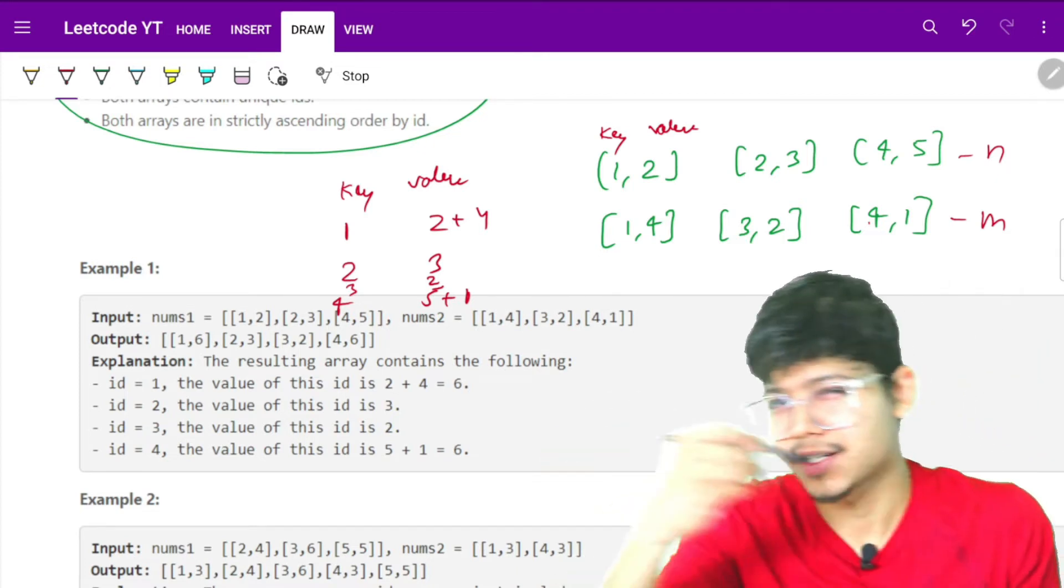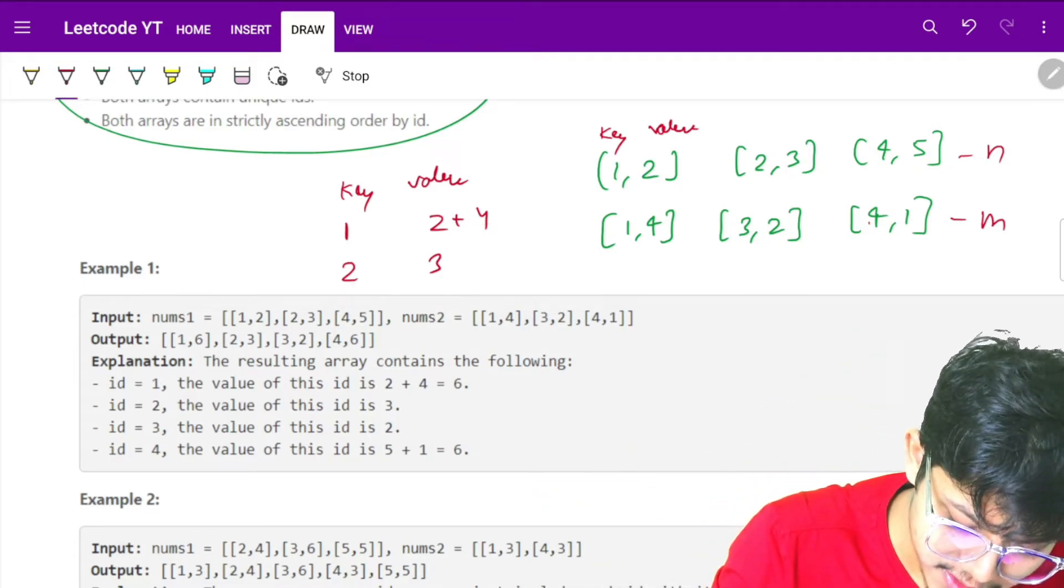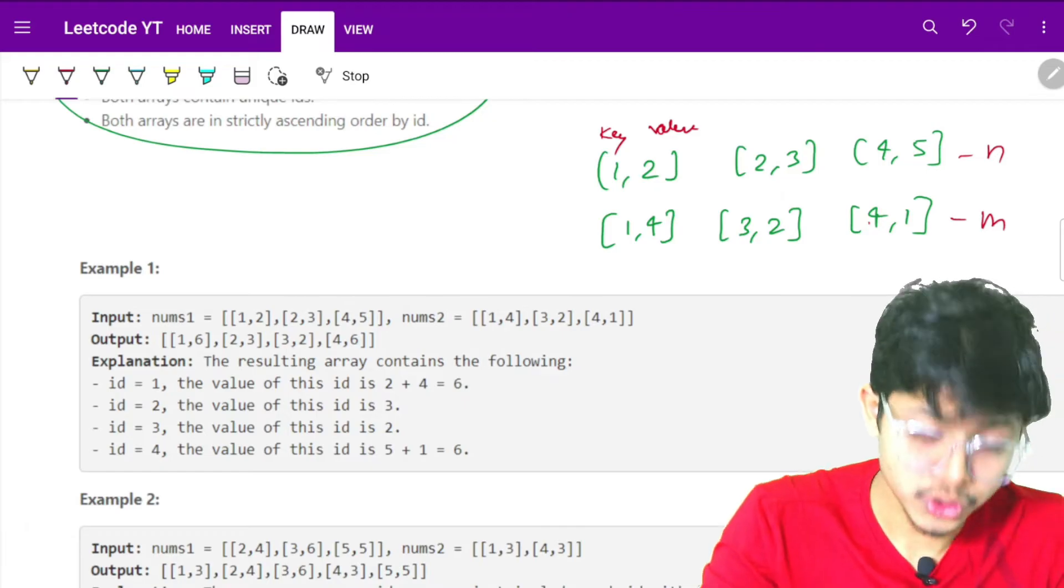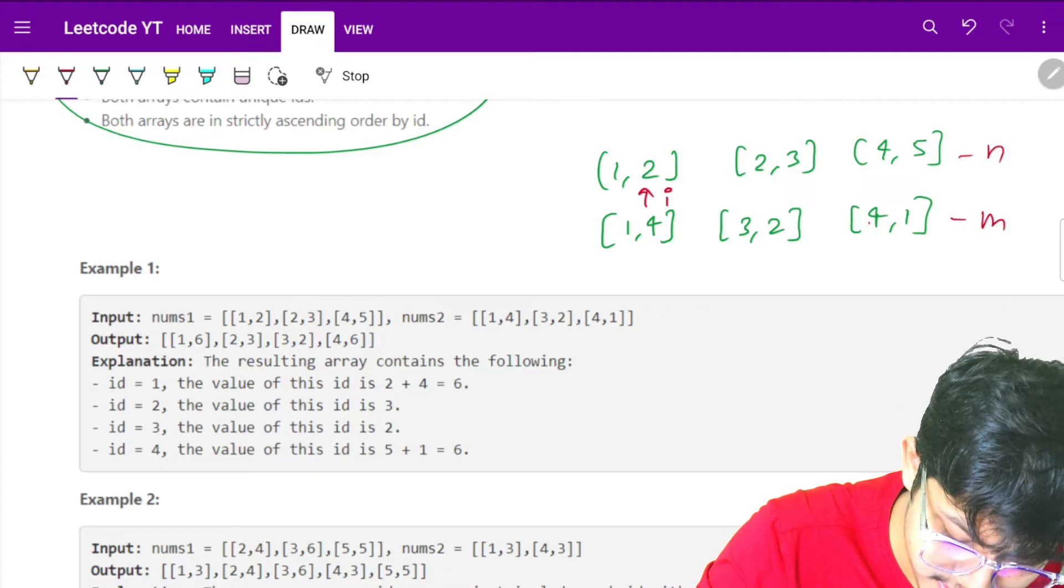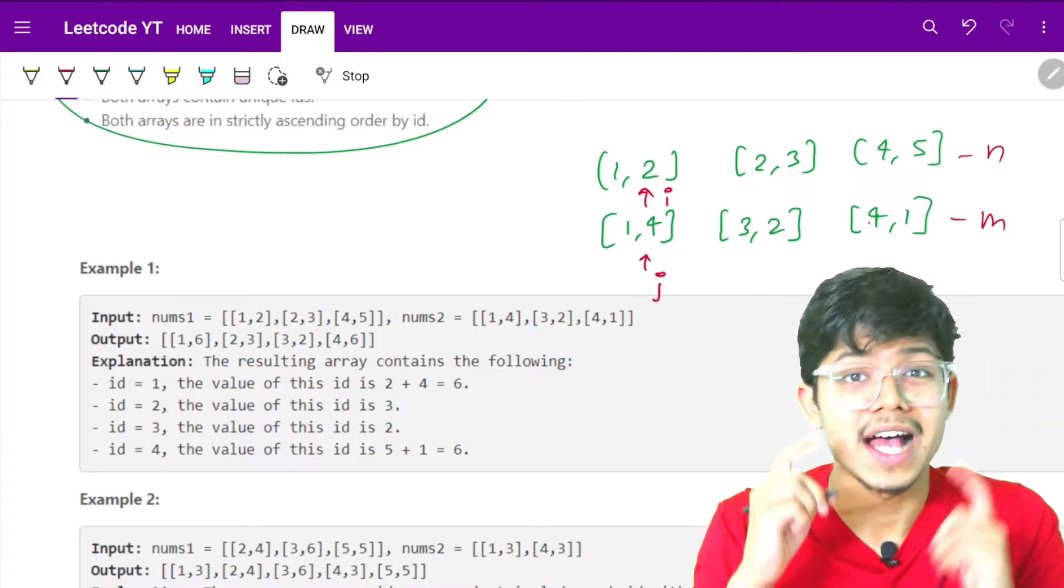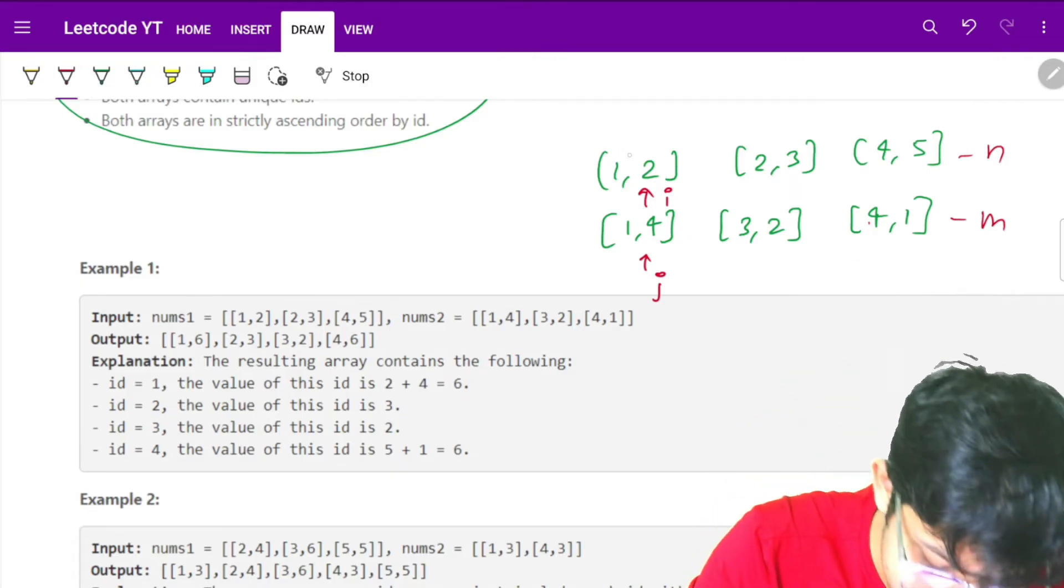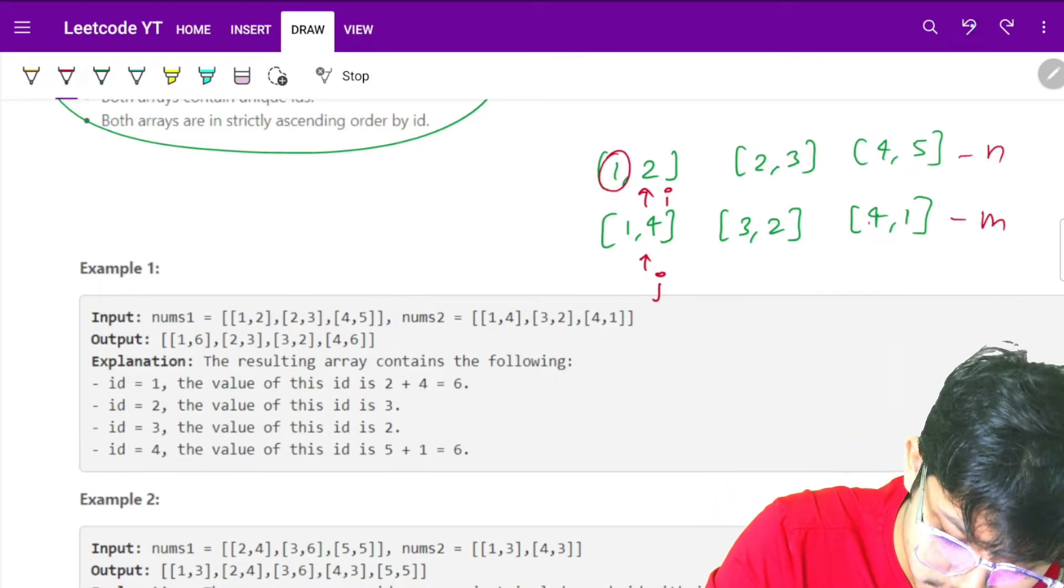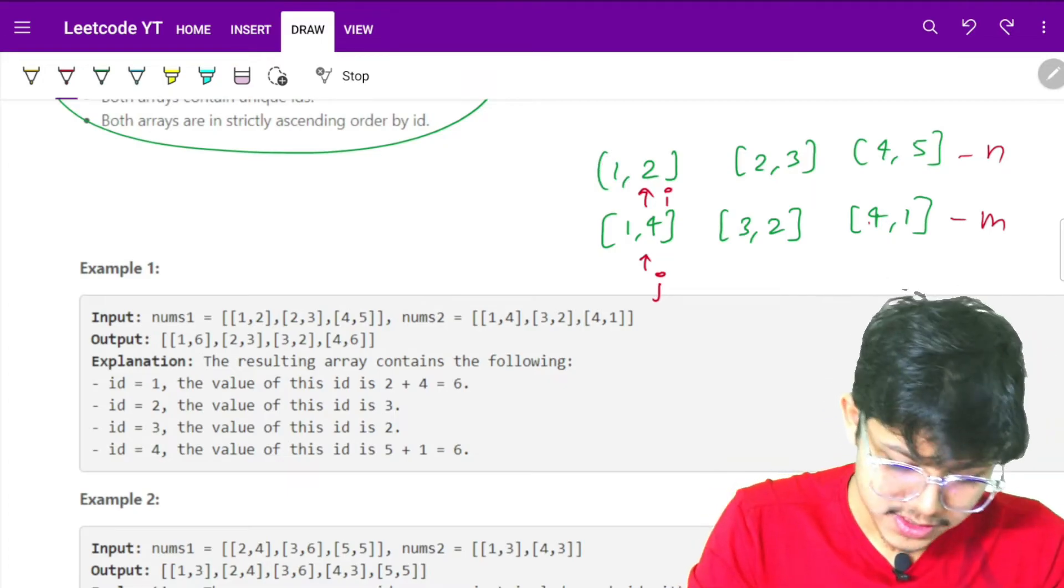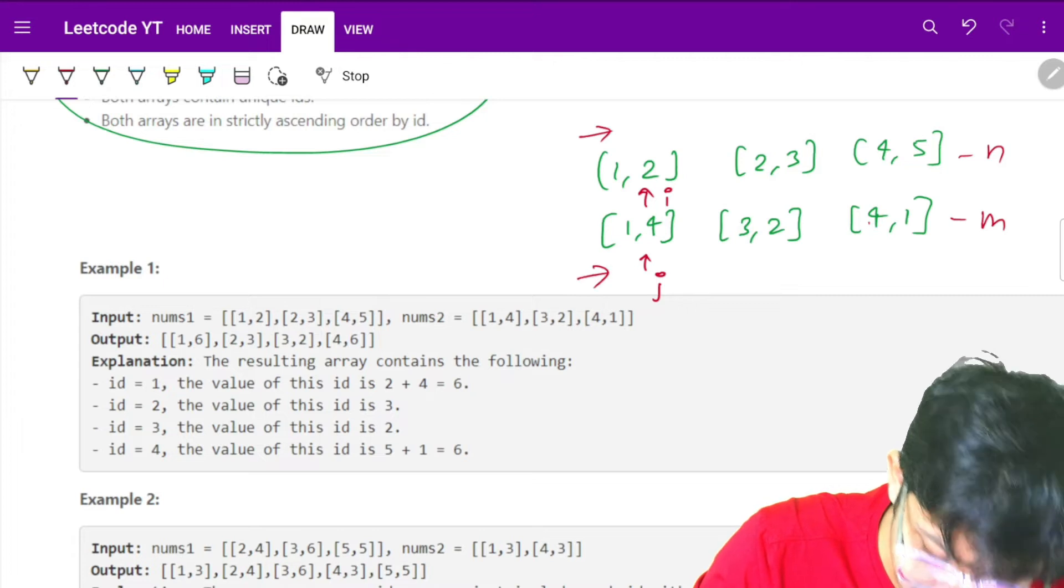Another very good solution would be not using extra memory, not using an ordered map. What we can do is use two pointers i and j. The i pointer points here, j pointer points here. Since this is sorted according to IDs, I can simply iterate on n and m simultaneously.